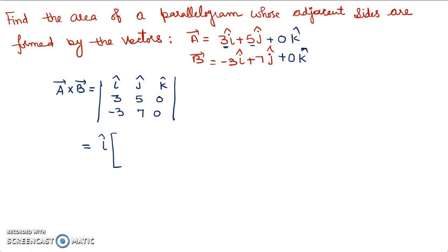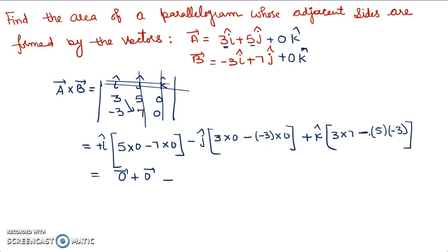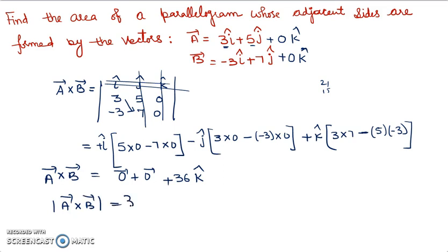Using the determinant method for cross product: expanding along i cap row — (5×0 − 7×0) gives 0; minus j cap — (3×0 − (−3)×0) gives 0; plus k cap — (3×7 − 5×(−3)) = 21 + 15 = 36. So a cross b = 36 k cap. Therefore the magnitude of a cross b is 36 units, which means the area of the parallelogram is 36 square units.